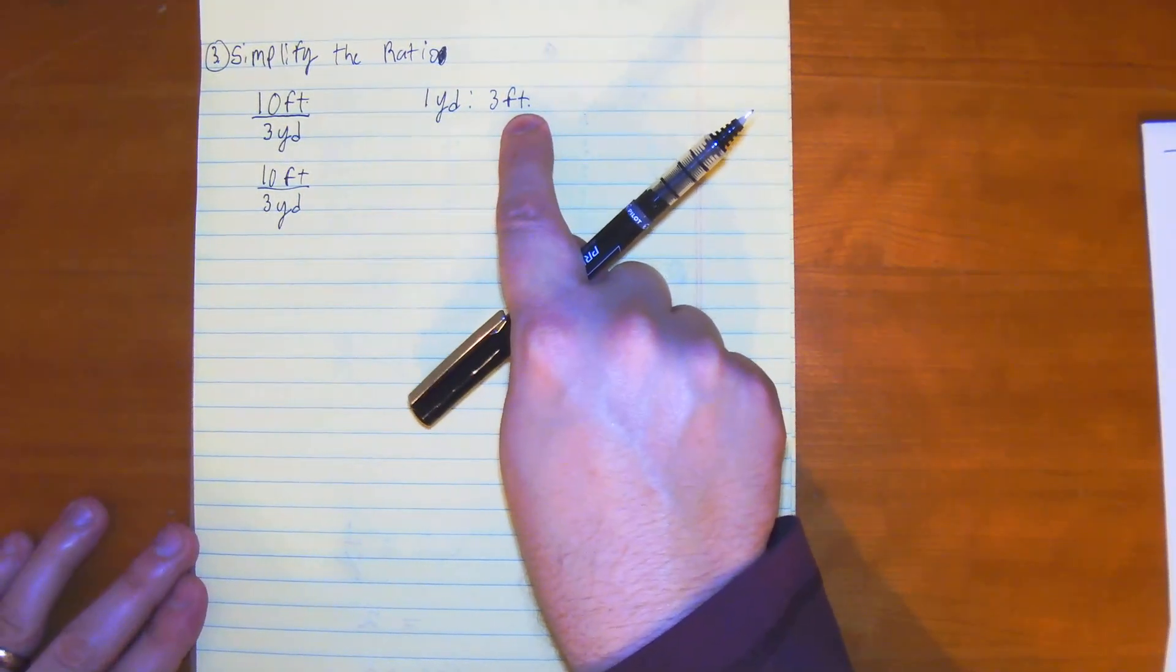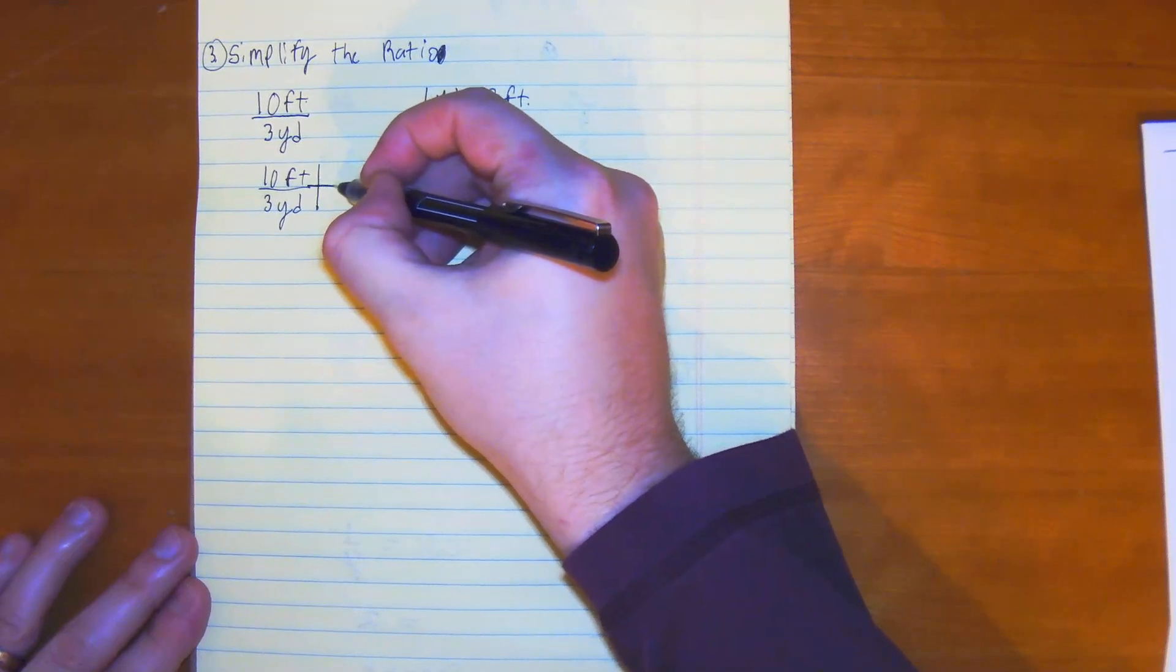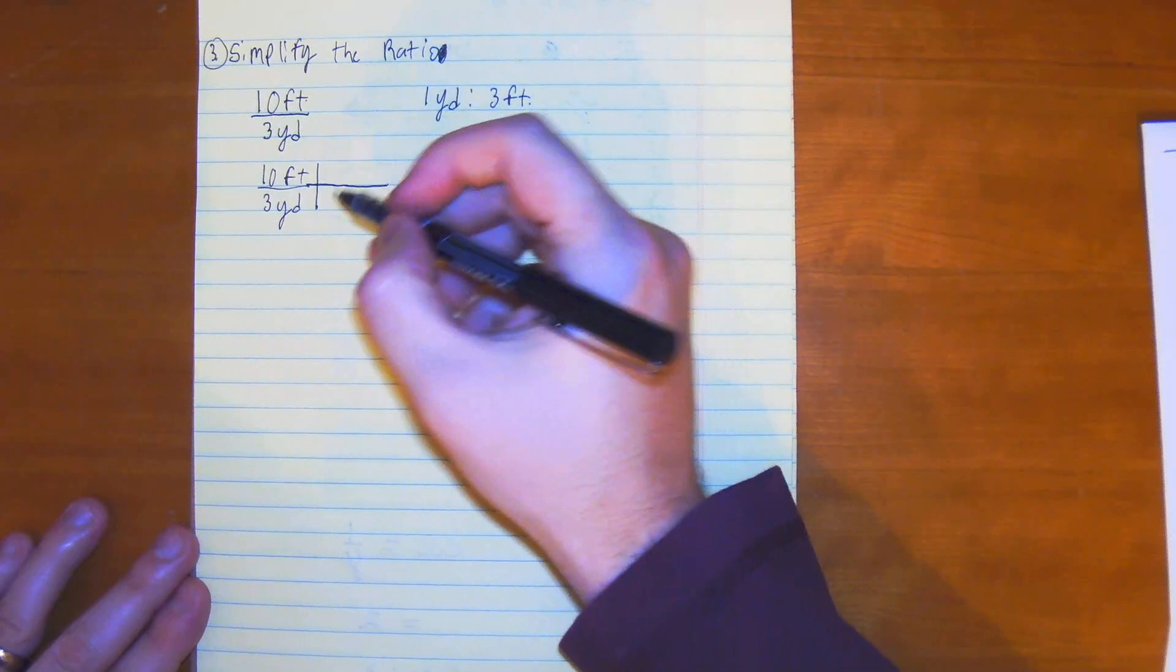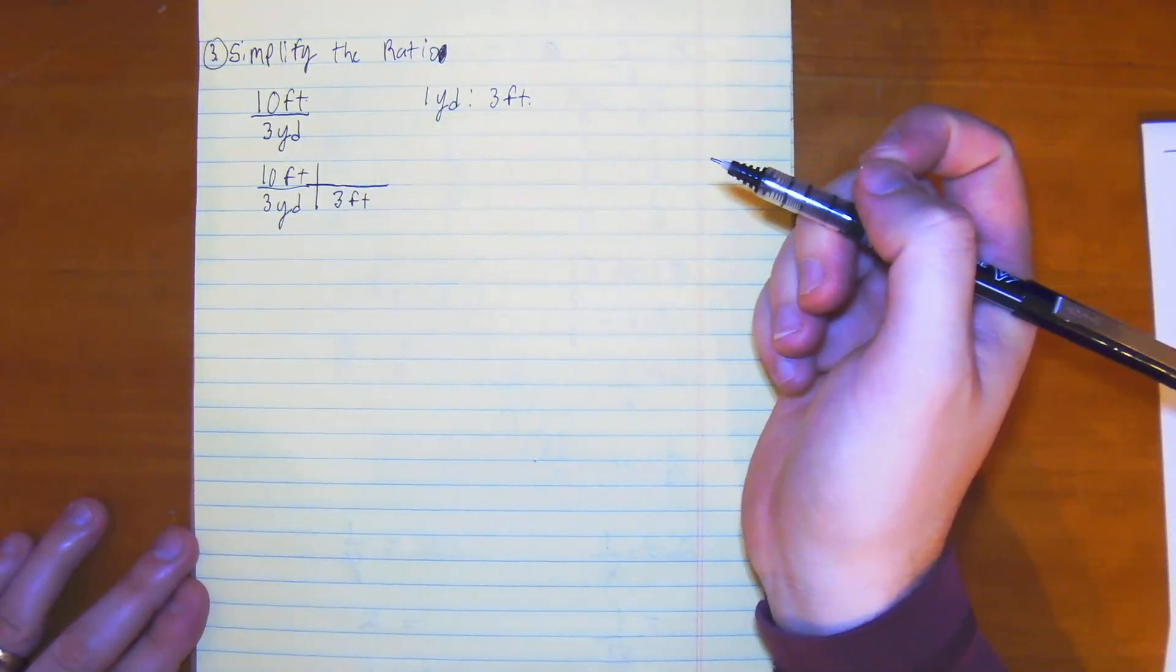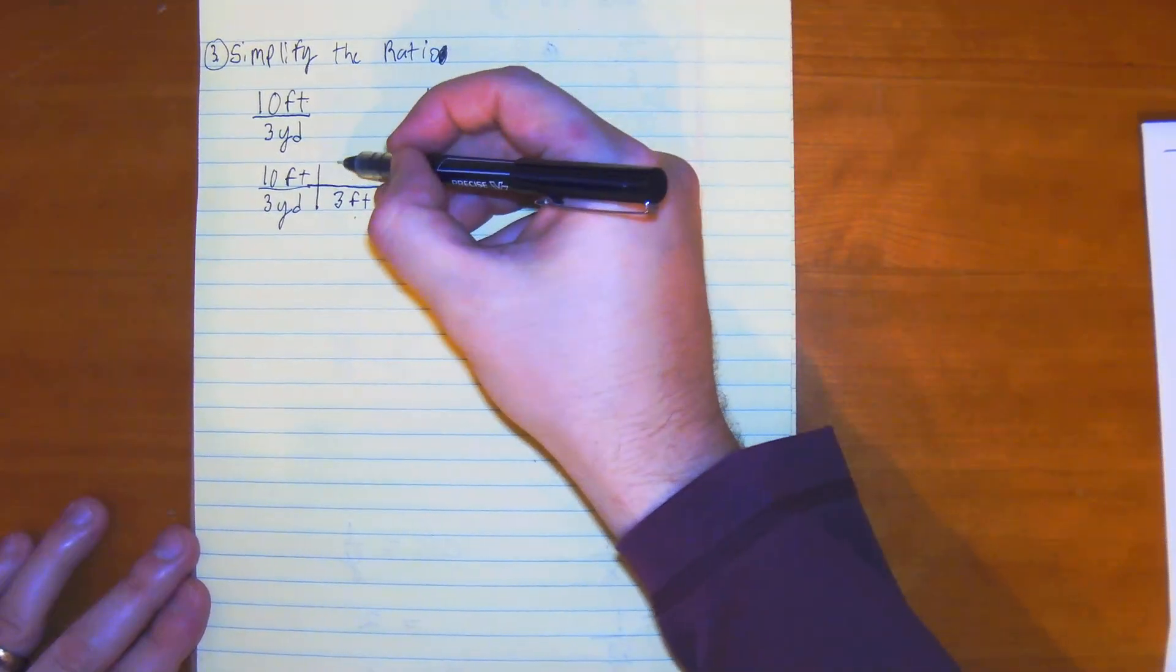So, the way we can convert it is put 3 feet on the denominator. So, I'm going to use it this way. This is just representing multiplication. I'm going to put 3 feet on the bottom. So, now that 3 feet is on the bottom, we have 1 yard at the top.